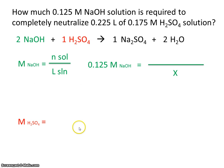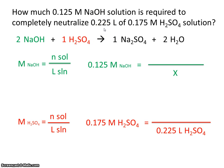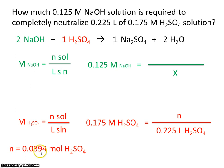Let's use the molarity equation for the acid: molarity of acid equals moles of acid divided by liters of acid solution. We know the molarity of the acid solution, and we know the volume of acid solution that we want to neutralize. So using algebra, we can solve for how many moles of acid are in the solution.